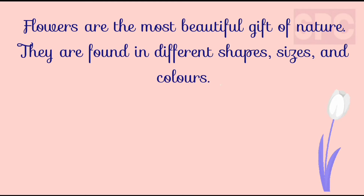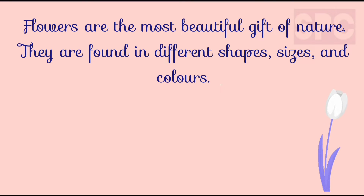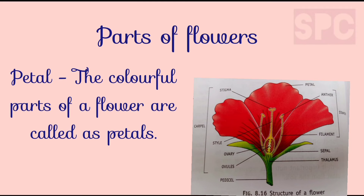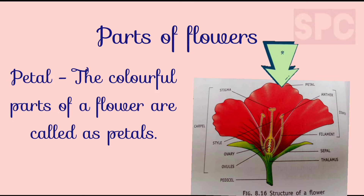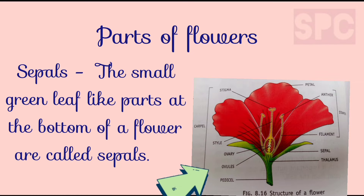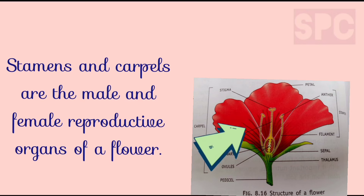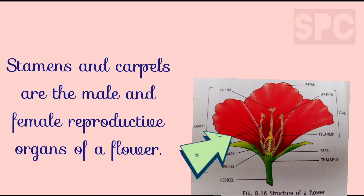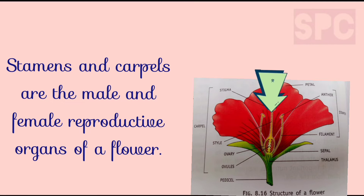Flowers are the most beautiful gift of nature. They are found in many different shapes, sizes, and colors. A flower has many different parts. The colorful parts of a flower are called petals. Whereas the small green leaf-like parts at the bottom of a flower are called sepals. Stamen is the male reproductive organ of a flower, whereas carpel or pistil is the female reproductive organ of a flower.